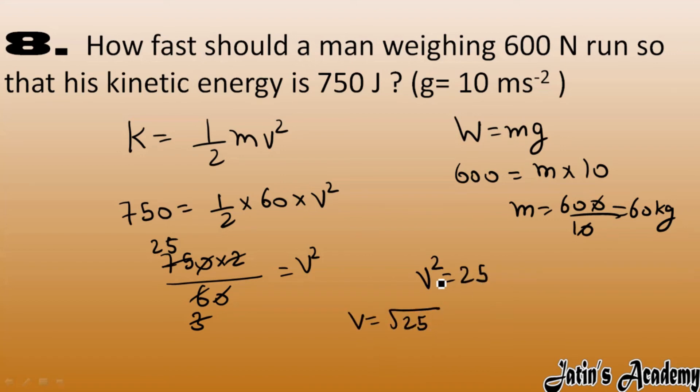Square root of 25 is 5. The unit of velocity we have is meter per second, so velocity we got as 5 meter per second.